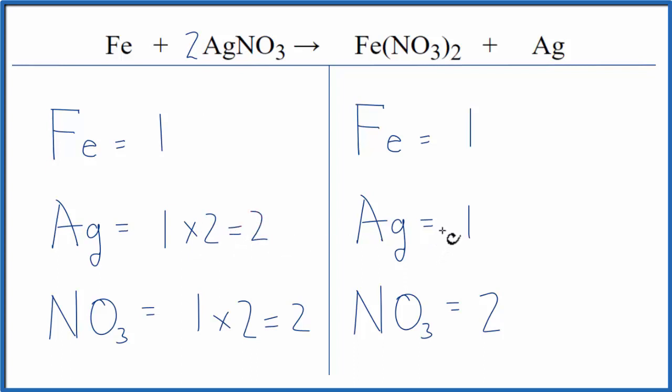But that's pretty easy to fix because silver's all by itself here, and if we put a coefficient of 2 in front of the silver, 1 times 2, that equals 2. Now the silvers are balanced, and we're done.